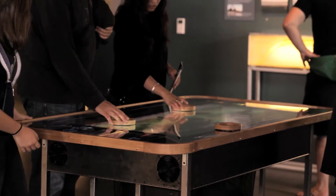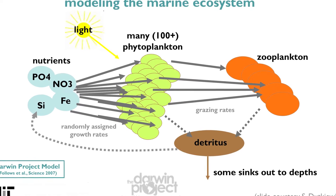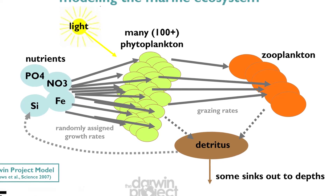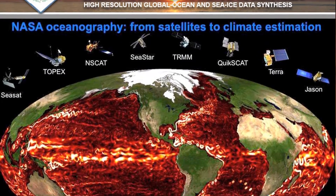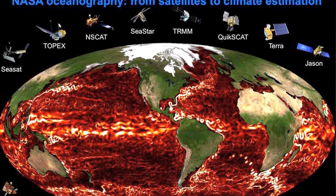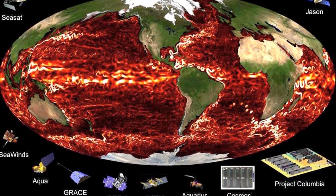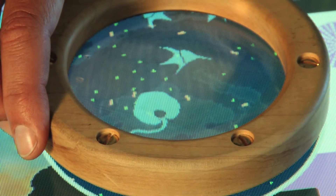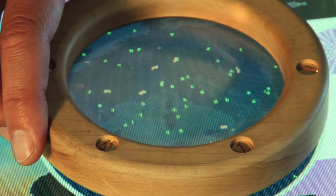My lab collaborated with the Exploratorium to create this plankton exhibit. We spent a while looking for suitable data sources, and the dataset we settled on was called the Darwin Project at MIT. They have a model of how plankton grow and survive in all the world's oceans, and they've simulated this on supercomputers using data sources from NASA, satellite imagery, and other climate supercomputer models.